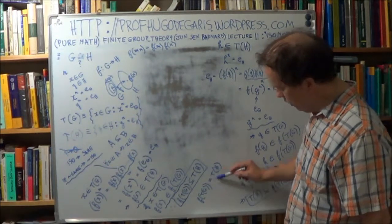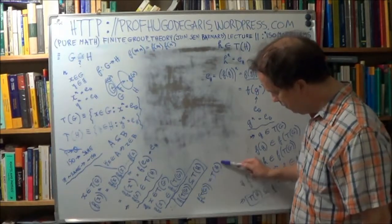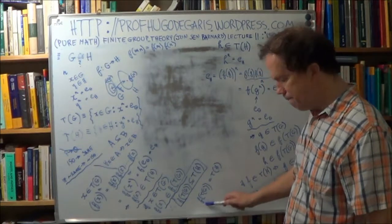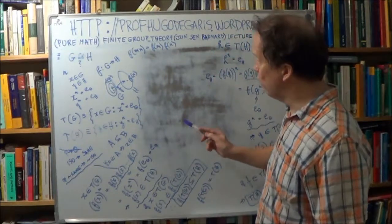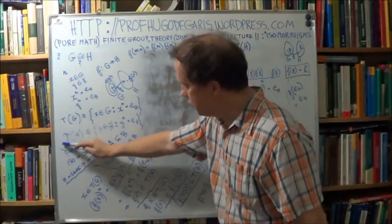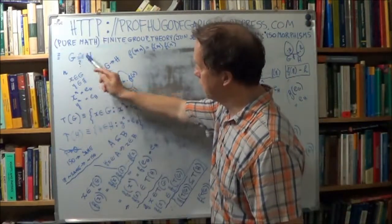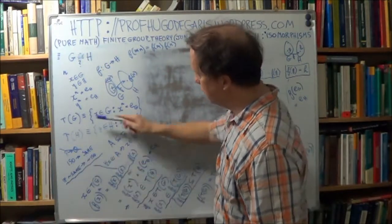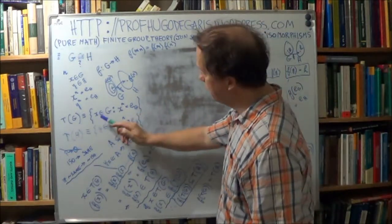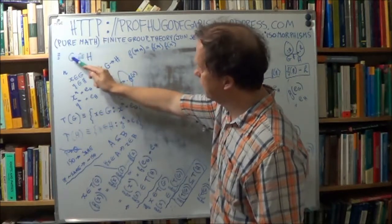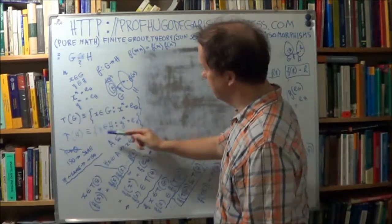What that means is, whatever the size of T(G) is, the size of T(H) is going to be the same. The size of this must be the same as this one because your mapping is bijective, one to one. Therefore the size of these two sets is the same — we have proved it. If these two groups are isomorphic, then the size of these two sets are the same, meaning the number of elements in G that satisfy this property equals the number of elements in H that satisfy it.